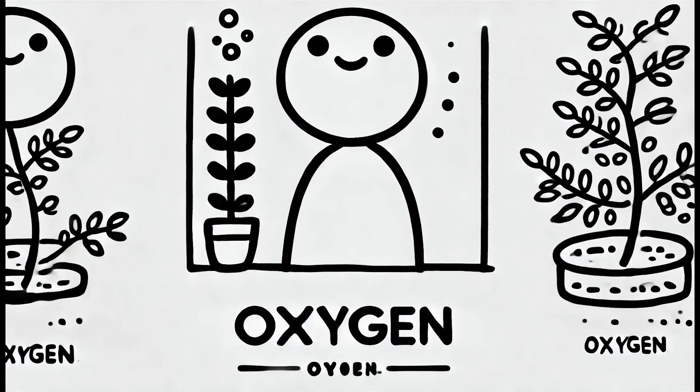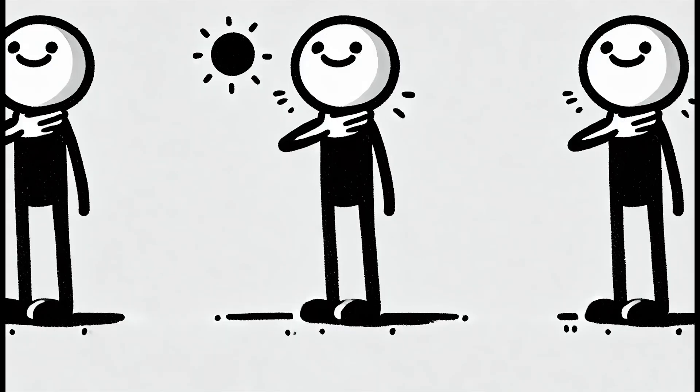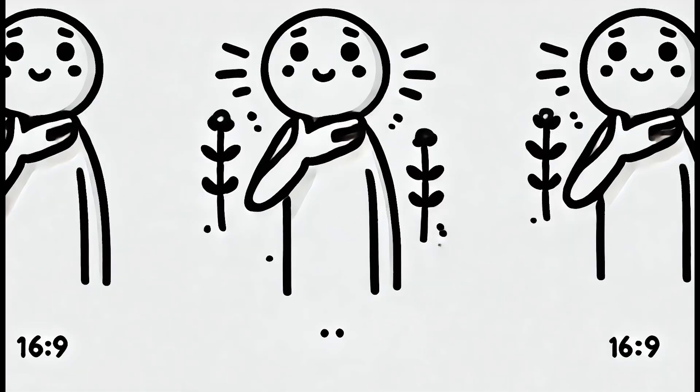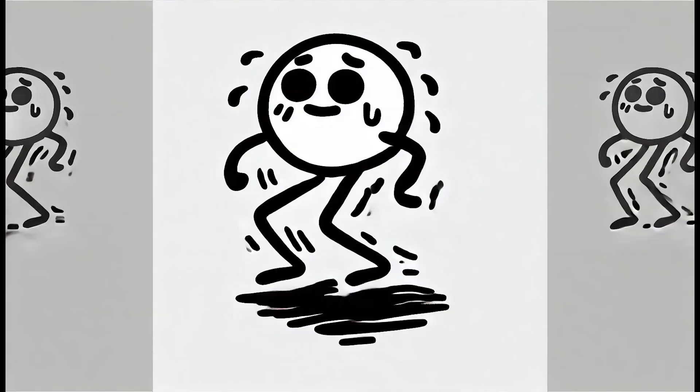Plus, plants are the ones that make oxygen, which is what we breathe. So without the sun, we'd run out of oxygen pretty fast. Imagine trying to breathe and there's no air.